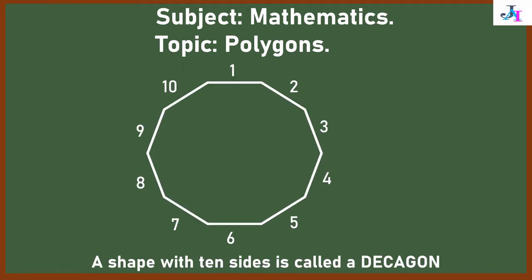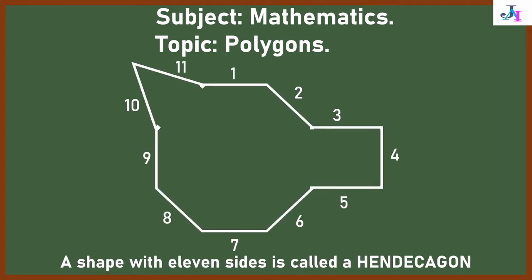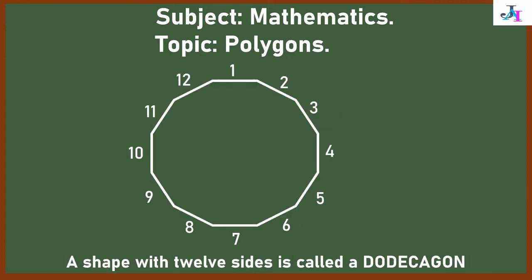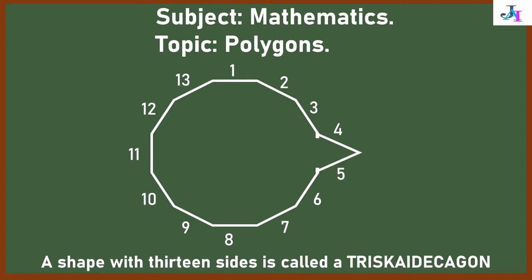Eleven sides shape is called hendecagon. A shape with 12 sides is called dodecagon. This is tridecagon, a shape with 13 sides.